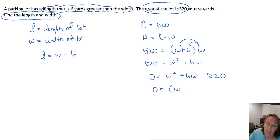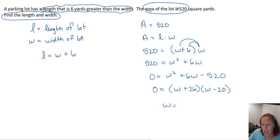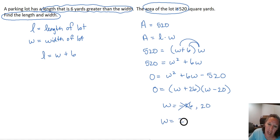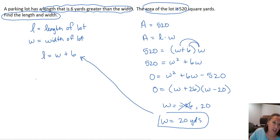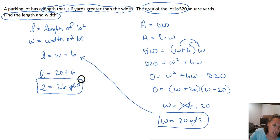We want a positive 26 and a negative 20. When we set each equal to zero, we subtract 26 to get W by itself, giving W = -26, or we add 20 giving W = 20. A negative 26 cannot be the width, so we eliminate that one. Our width is 20 yards, and plugging that in to find the length gives us a length of 26 yards. So those are the length and width of our parking lot.